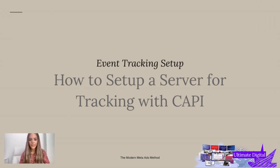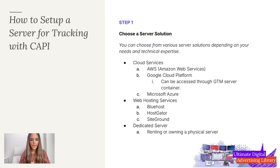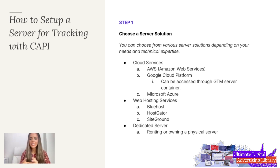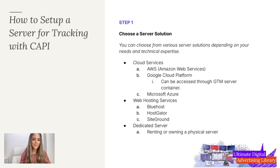How to set up a server for tracking with CAPI, or Conversions API. Step number one: you're going to choose a server solution. You can choose from many different server options depending on your needs and technical expertise. This is going to get a little into the nitty-gritty and might be more for a developer, but it's important to understand because sometimes we don't have developers and we have to do it ourselves.